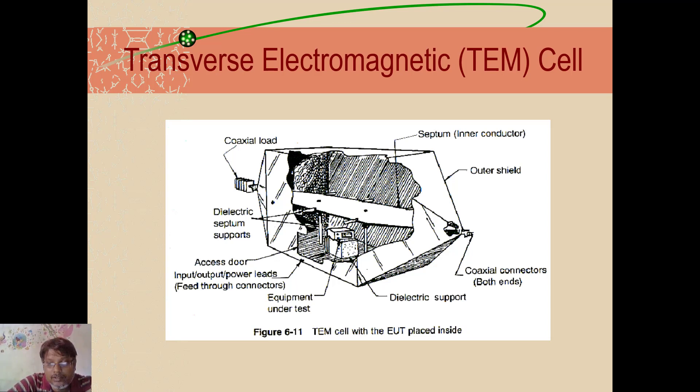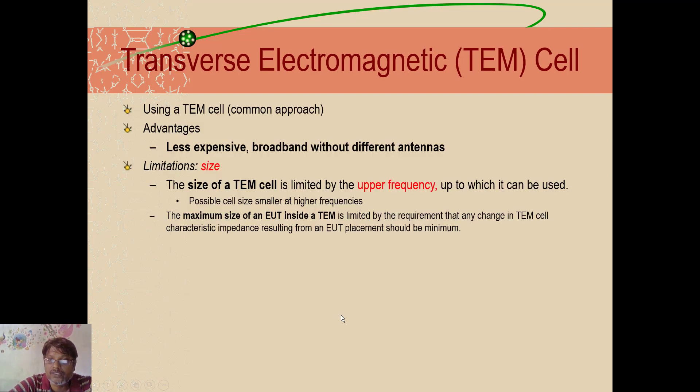Using a TEM cell is a common approach, and advantages is less expensive. It's just taken as an alternative to open area test, but still it has got some drawbacks as well. What are the advantages? It is less expensive and broadband without different antennas. There is no need of any antennas. This waveguide medium itself enough.